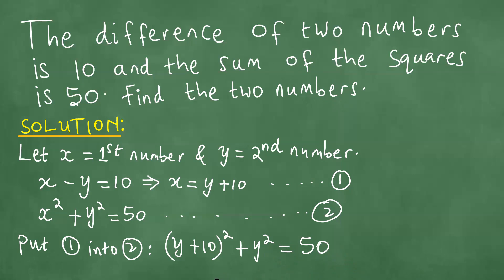We proceed with this and solve. Y plus 10 all squared plus y squared equals 50. If you square this, you get y squared plus 20y plus 100 plus y squared equals 50.